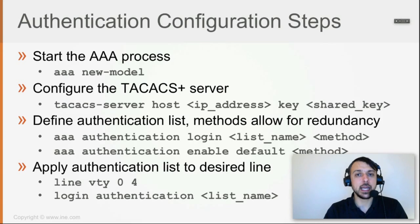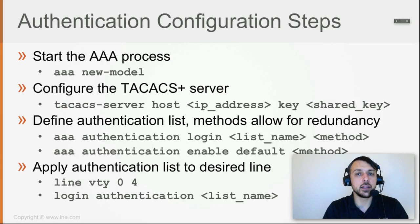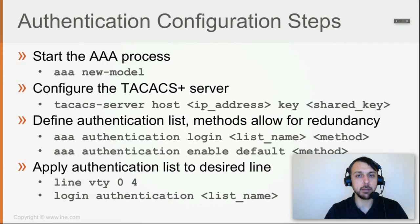The 'default' keyword is added only for the authentication enable method because IOS doesn't allow you to configure named lists for enable authentication, but you can configure named lists for login authentication. The main difference between a default list and a non-default named list is that non-default lists are not automatically enforced. If you define the list as 'default', it will by default enforce authentication as that list states for all methods of access to the device.